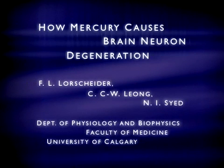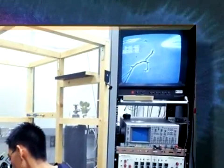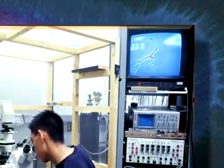How Mercury Causes Brain Neuron Degeneration. Mercury has long been known to be a potent neurotoxic substance, whether it is inhaled or consumed in the diet as a food contaminant.